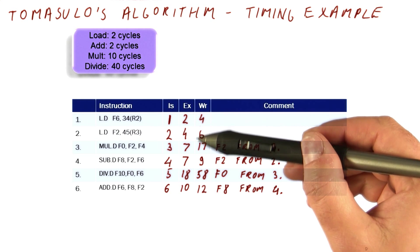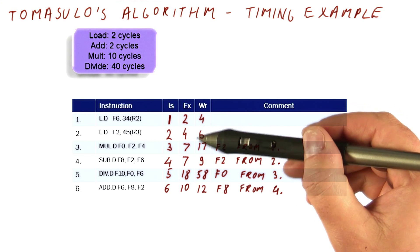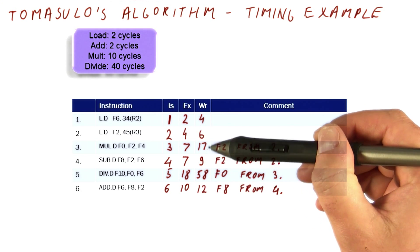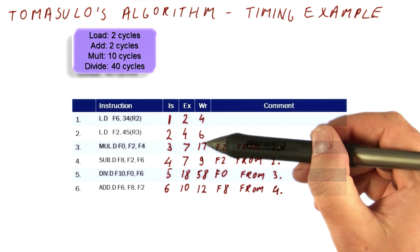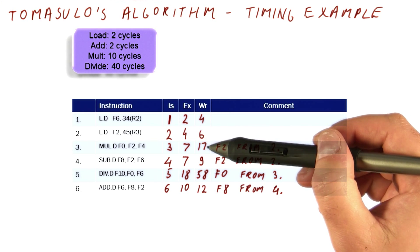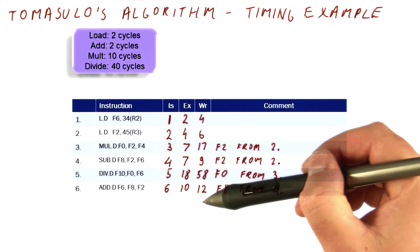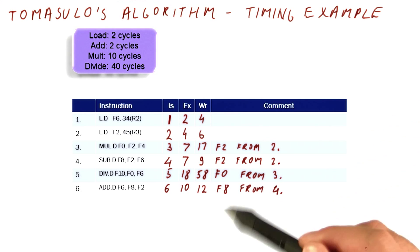And now, because we've been doing this out of order, we have to check: are there any two instructions that are actually writing in the same cycle? If yes, then we'll have to redo this. Basically, we have to postpone some of the writes in order for that to happen. But because these are all different cycles, everything is fine. And this concludes our timing example.